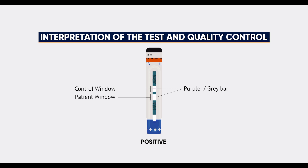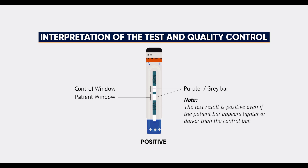The appearance of two purple or grey bars in both the control window, labelled 'control', and the patient window, labelled 'patient', indicates the TB-LAM result is positive. Note that the test result is positive even if the patient bar appears lighter or darker than the control bar.